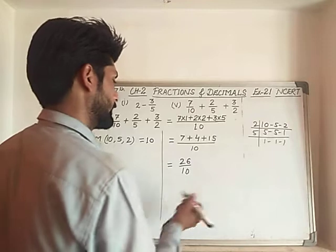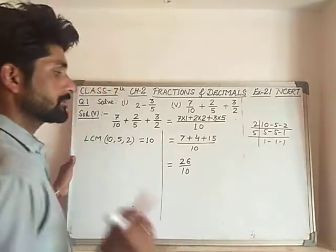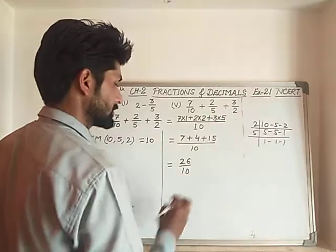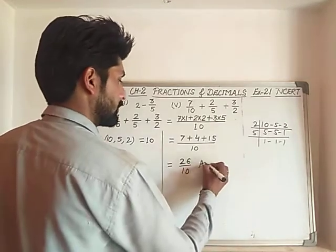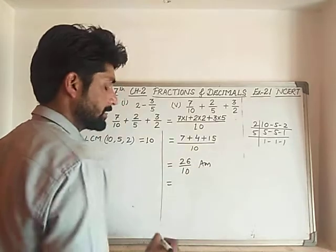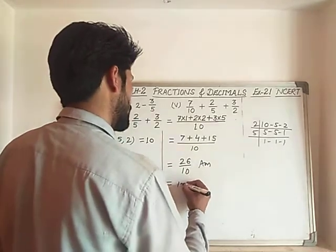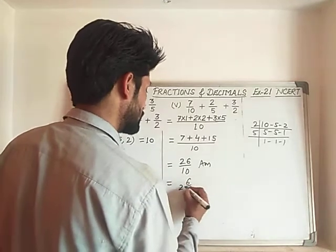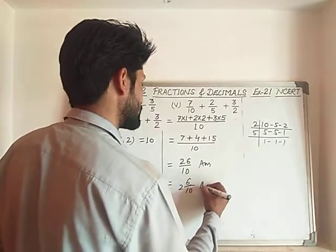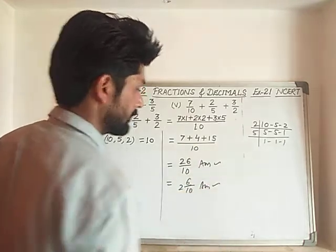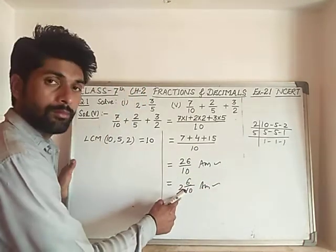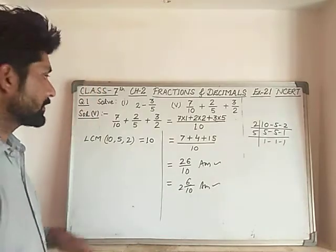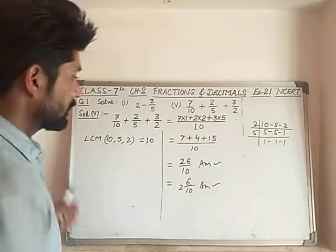We can write 26 upon 10 as an improper fraction, or convert it to a mixed fraction. So 26 upon 10 is also one of the answers — either in improper fraction form or mixed fraction form. That was your fifth part of the first question. Now we will discuss question number two.